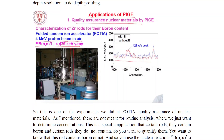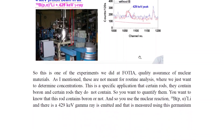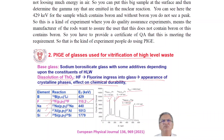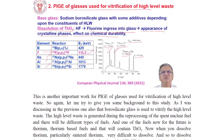Application of PIGE includes quality assurance of nuclear materials — specifically characterization of zirconium rods for their boron content. A folded tandem ion accelerator (FOTIA) using a 4 MeV proton beam is used. The reaction is 10B(p,α)7Li plus a 429 keV gamma ray, from whose peaks the counts and presence of boron — with and without boron in zirconic rods — can be determined.